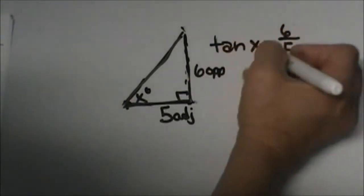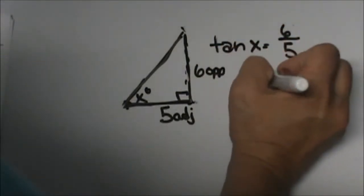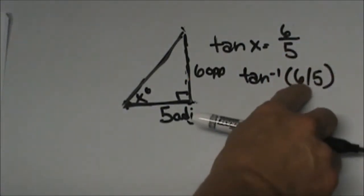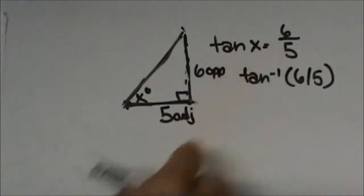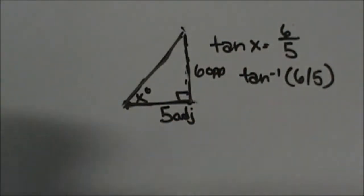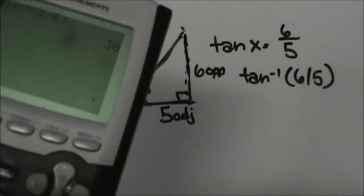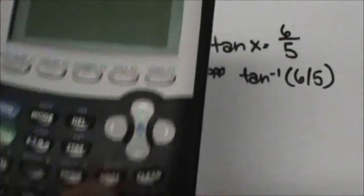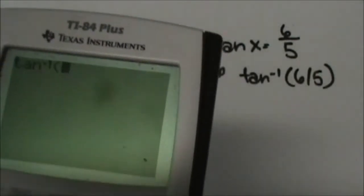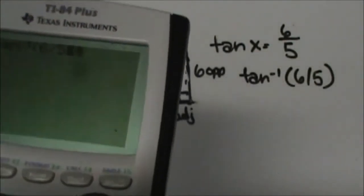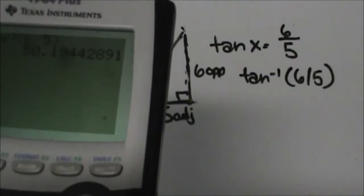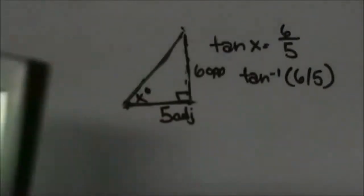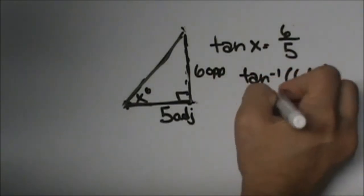Let's work the inverse tangent of 6 divided by 5. Top divided by bottom. Grab your calculator. We are going to take second tangent, get our inverse tan of 6 divided by 5, and we get 50.1. So we can just round that to 50 degrees. So x is 50 degrees.